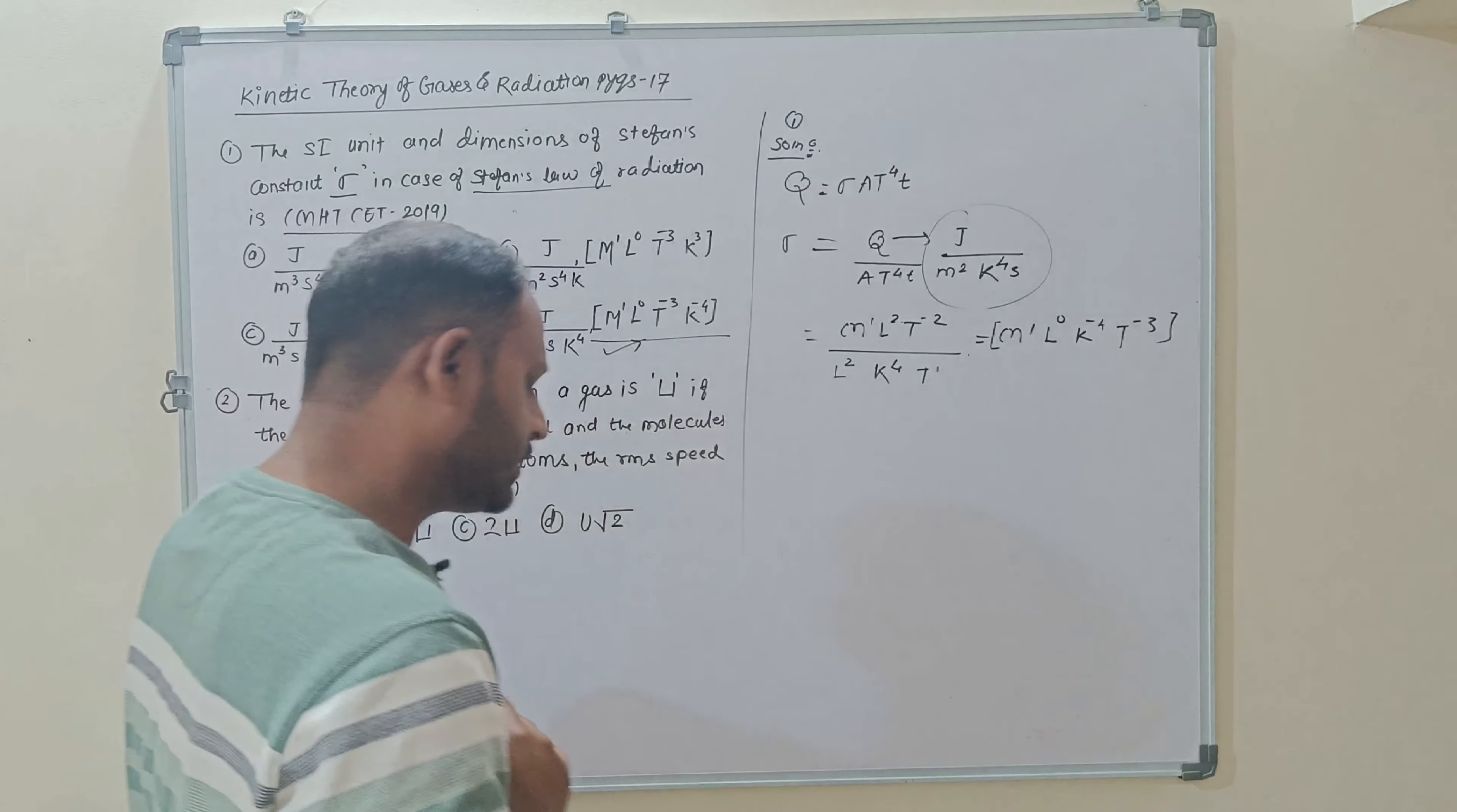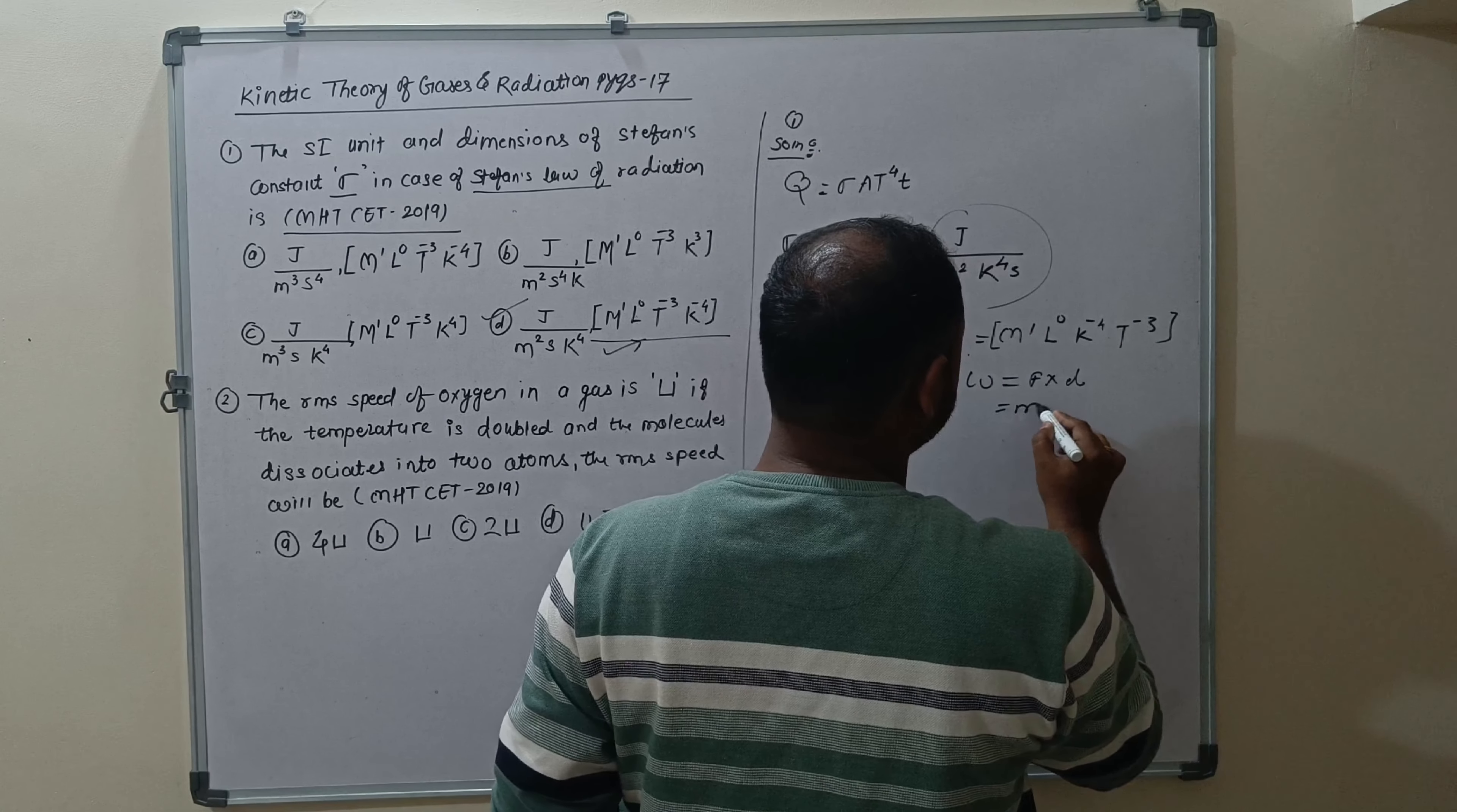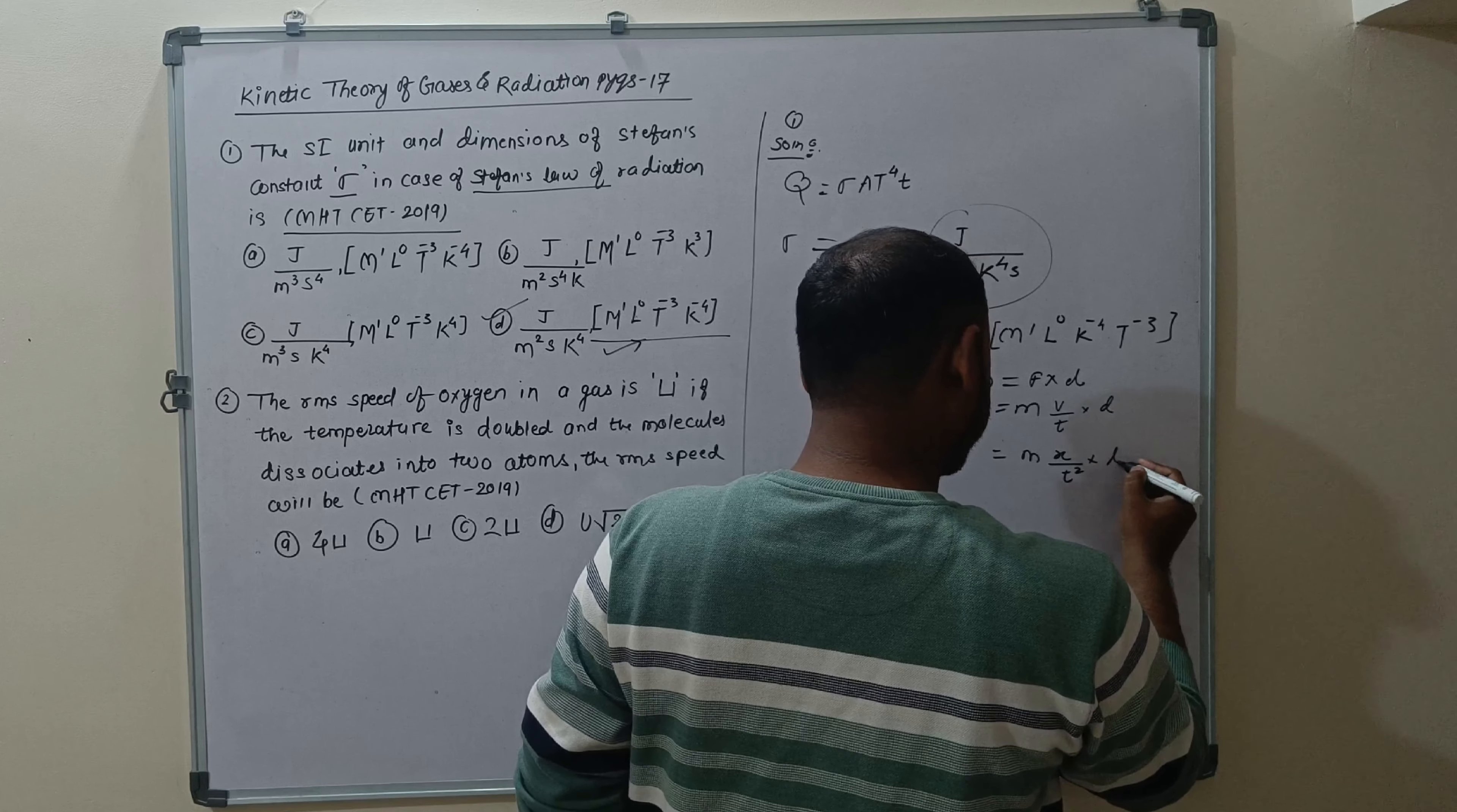M1 L0 T power minus 3 K power minus 4 exactly matches. The energy dimension M2 L2 T minus 2. Energy is work done, work done is force into displacement.